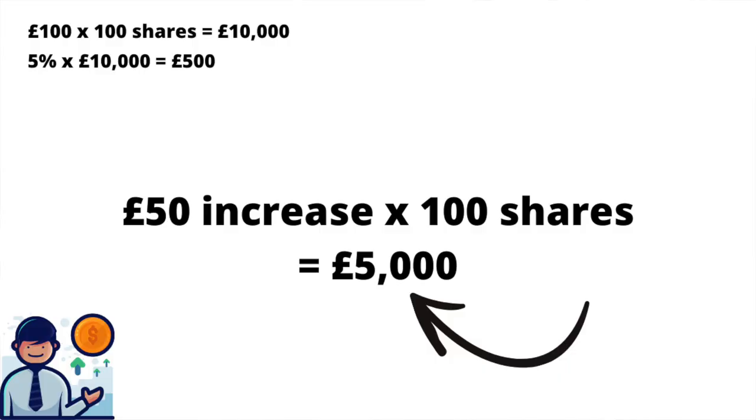There are two possible outcomes. If I'm right and the price goes up from £100 to £150 - a £50 increase - the increase of £50 per share times 100 shares is a £5,000 increase. When you close your position because you've made a profit, your margin is returned to you and you've made the £5,000 profit. So a very small margin has enabled you to make a pretty significant profit.